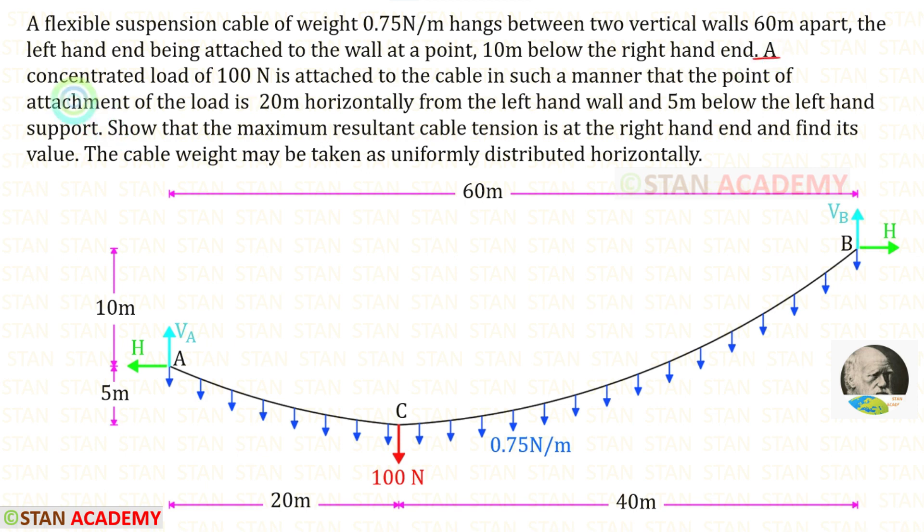A concentrated load of 100 Newton is attached to the cable in such a manner that the point of attachment of the load is 20 meters horizontally from the left hand wall and 5 meters below the left hand support.